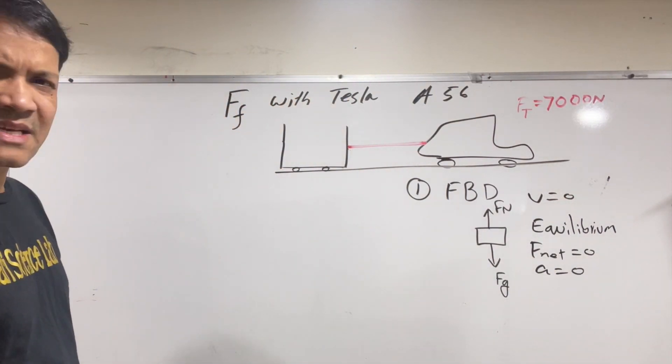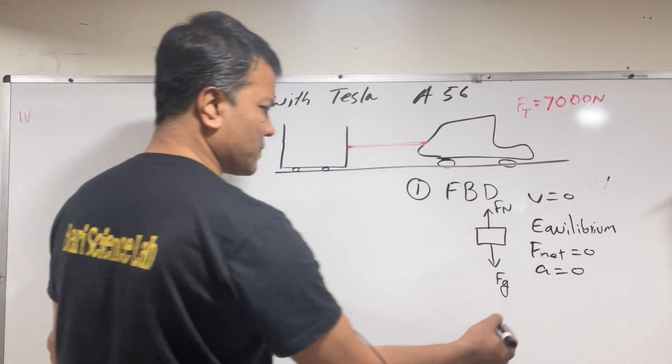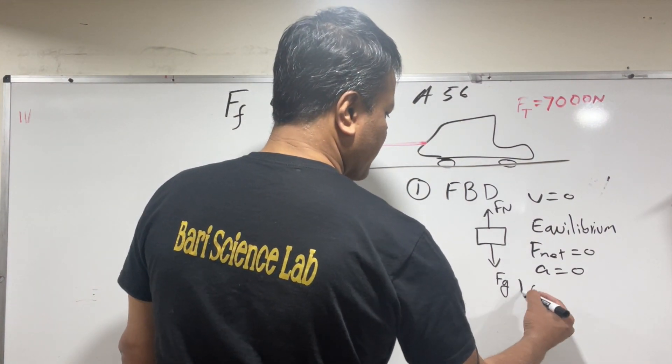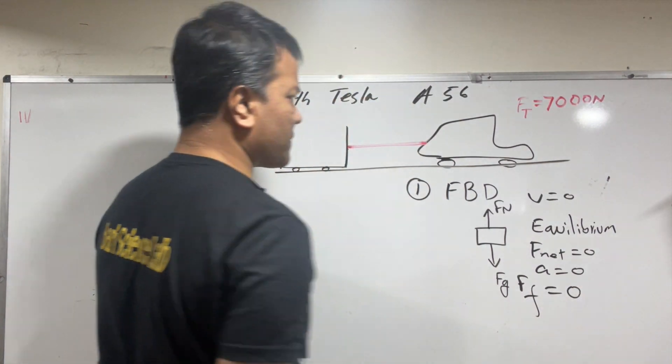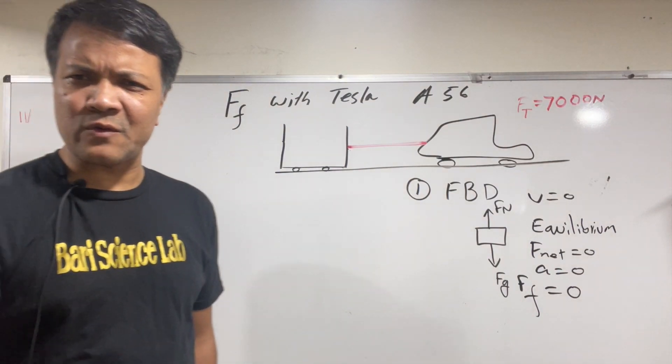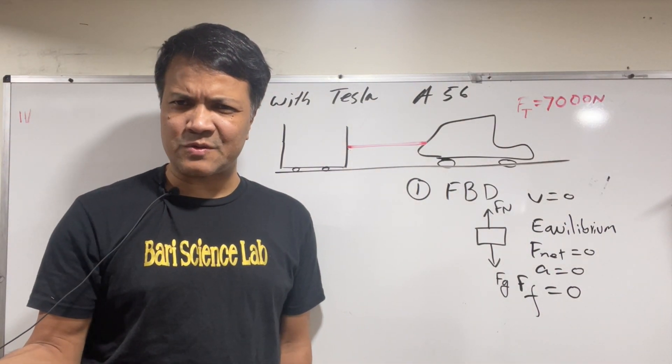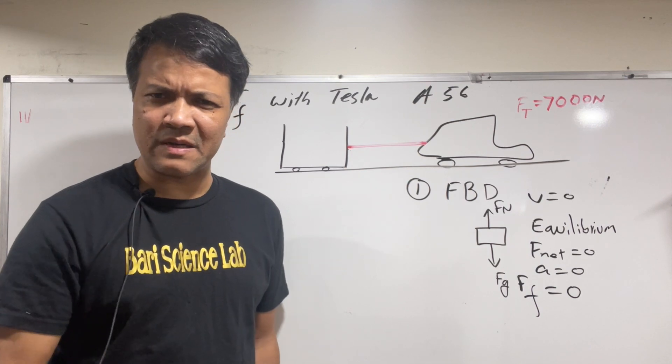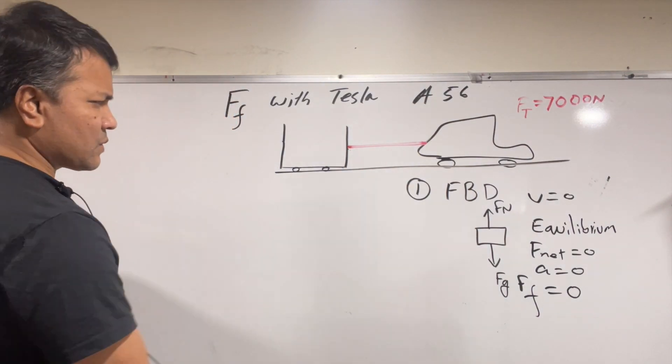Everything is zero because the Tesla is at rest. That's scenario one, and friction is zero. Friction is also zero when applied force is zero. By definition, friction is zero. You should understand that we already learned that.